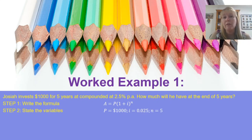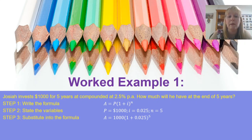So our first step is always write the formula. Second step is always substitute the variables from the question into the formula. We know that Josiah has invested $1,000. That's our principal. The interest rate was two and a half percent. And if I convert that to a decimal by dividing it by 100, I end up with 0.025. And n is the number of compounding periods. Well, it's compounded once a year and it's for five years. So n is equal to five. Now I simply substitute that into the formula. I'm going to have A equals 1,000 multiplied by 1 plus 0.025 raised to the power of 5.